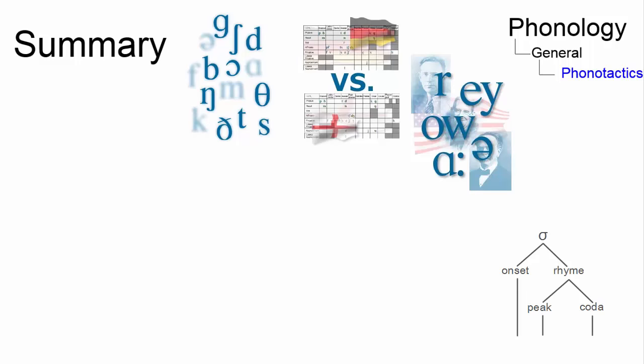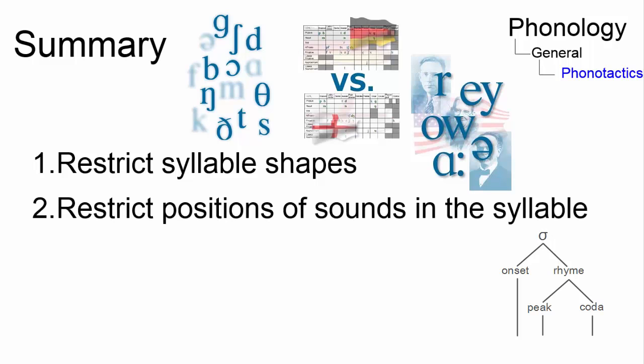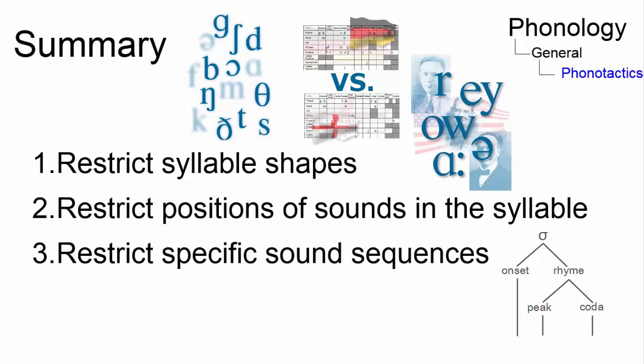In summary, language specific phonotactic constraints restrict permissible syllable structures, where certain sounds can occur in the syllable, and which sounds can precede and follow certain other sounds.